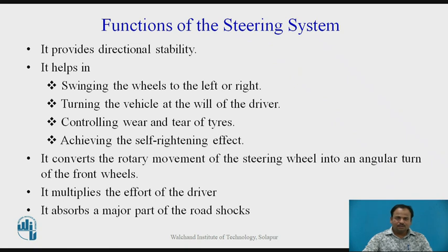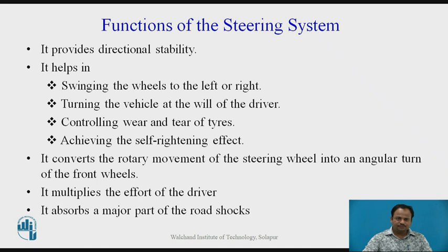Functions of the steering system: It provides directional stability. Whenever a vehicle is running on the road surface, we can have the vehicle wheels at the required direction. It helps in swinging the wheels to the left or right. It helps in turning the vehicle at the will of the driver. It helps in controlling wear and tear of the tyres. It helps in achieving the self-righting effect. Also, it converts the rotary movement of the steering wheel into an angular turn of the front wheels. It multiplies the effort of the driver, and it absorbs a major part of the road shocks.